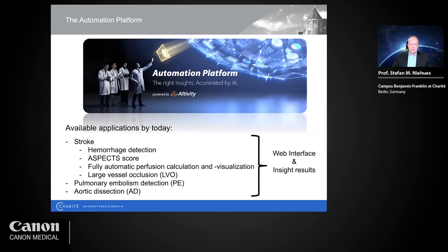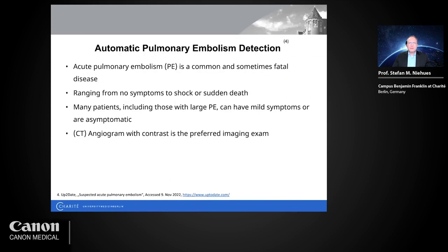Applications available today started with stroke: hemorrhage detection, the ASPECT score, fully automatic perfusion calculation and visualization, and large vessel occlusion detection. Now we also have pulmonary embolism detection and aortic dissection. Pulmonary embolism is a common and sometimes fatal disease, ranging from no symptoms to sudden death. Many patients, even those with larger PE, can have mild symptoms or none, so CT angiography is the modality of choice.